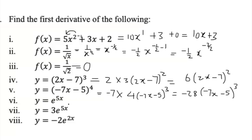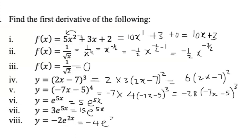For an exponential function, differentiate e to the 5x: differentiate 5x to get 5, then rewrite e to the 5x. Multiplying by 3 gives 15e to the 5x. For another exponential, differentiate 2x to get 2, then multiply by negative 2 to give negative 4e to the 2x.